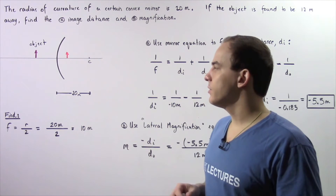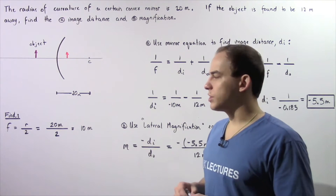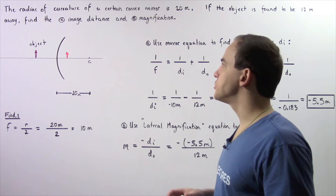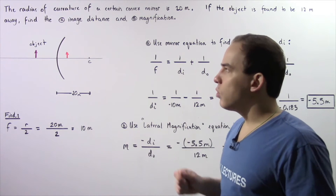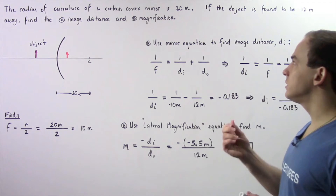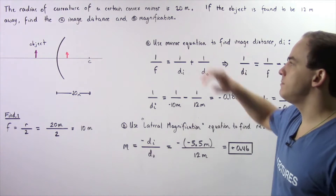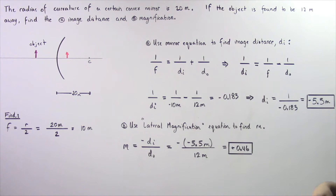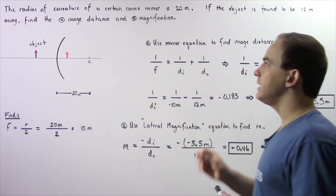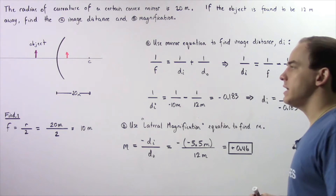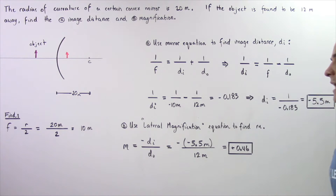Let's look at the following example that deals with convex mirrors and the mirror equation. Suppose the radius of curvature of a certain convex mirror is 20 meters. If the object is found to be 12 meters away, find A, the image distance, and B, the magnification.